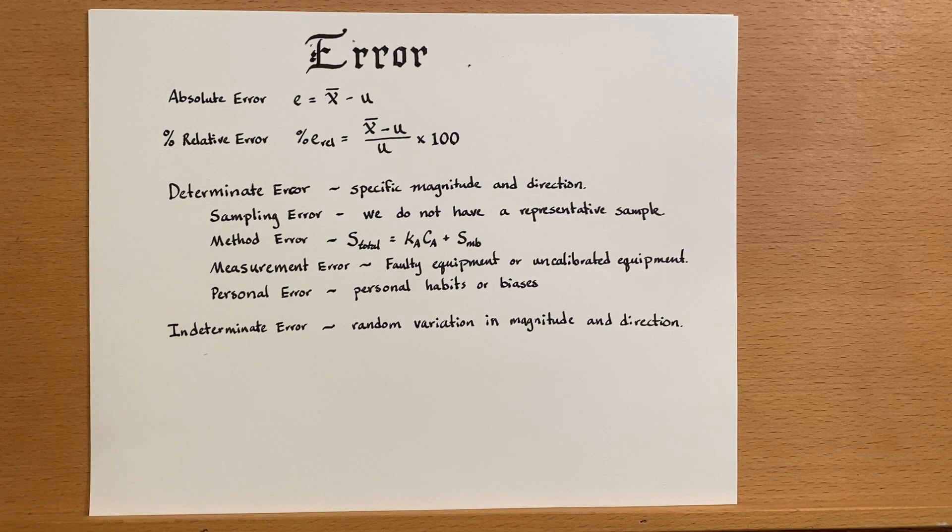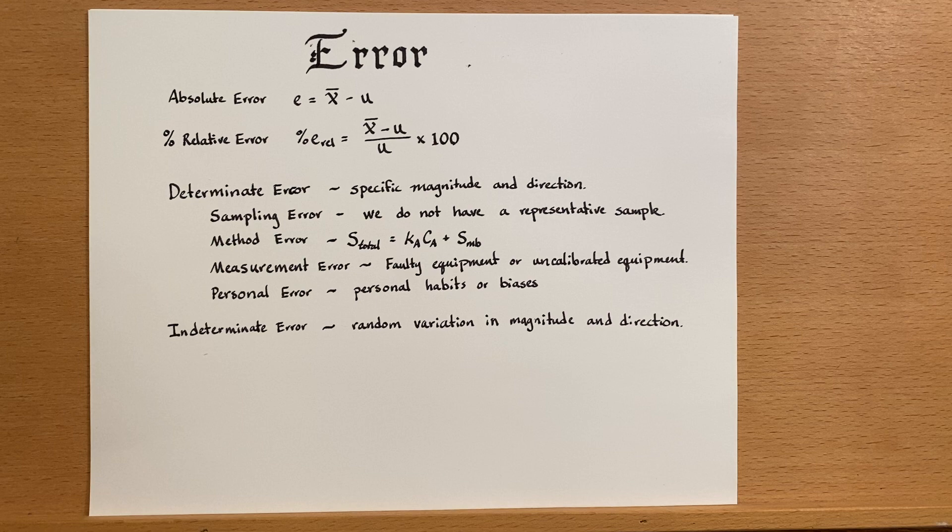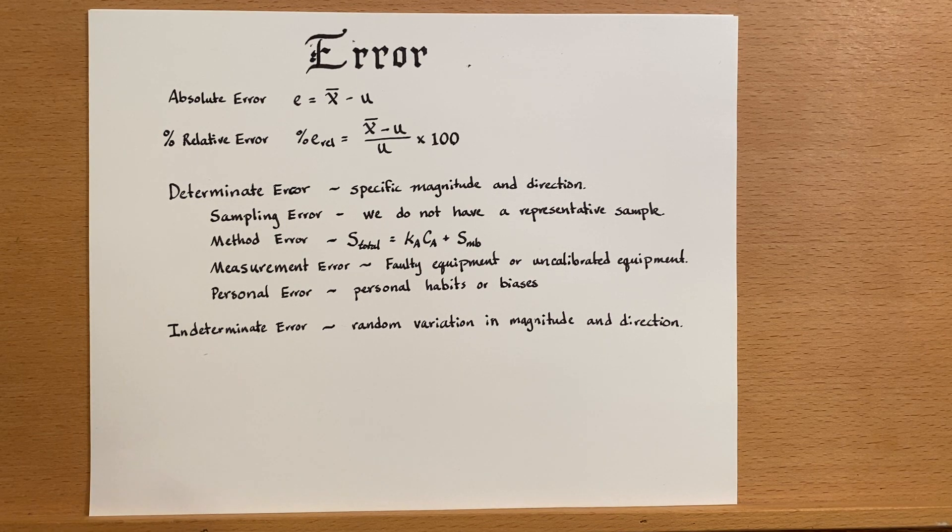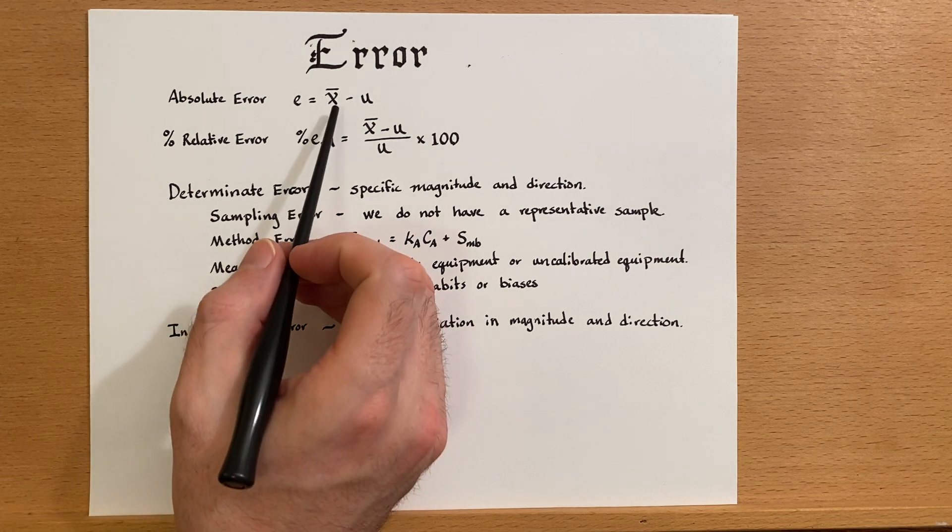Error is something that analytical chemists deeply care about. We're very focused on reducing error sources so that we get a better measurement. It's important to identify what error is and where it came from, and that way we can have a possible solution to eliminate or at least reduce that error.